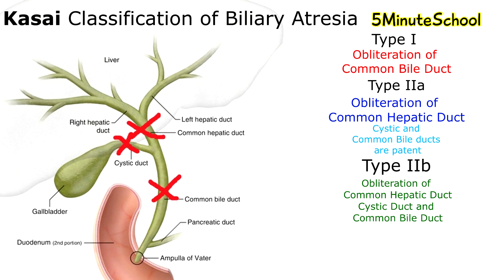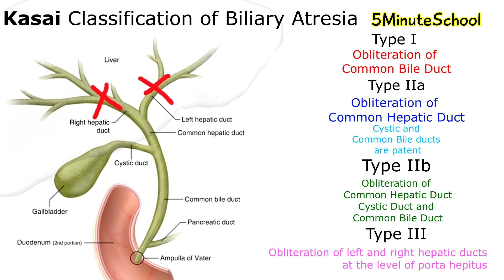Moving on to type 3: we have obliteration of the left and right main hepatic ducts at the level of the porta hepatis, which is around this region here on the image.